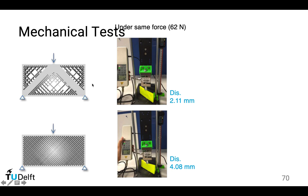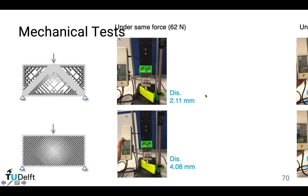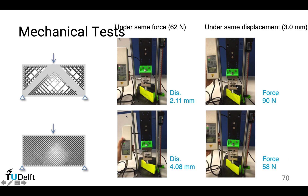We did a mechanical test comparing the adaptive subdivided rhombic structure with the uniform structure. We applied the same amount of force — 62 N — and observed that with the optimized structure the displacement is 2.11 mm, while without optimization the uniform structure has a displacement of 4 mm, which is almost twice as large. We also pressed the structure to achieve the same displacement of 3 mm. The optimized version could support a load of 90 N, while the uniform one deformed under a force of 58 N. This confirms that this optimization improves stiffness significantly.